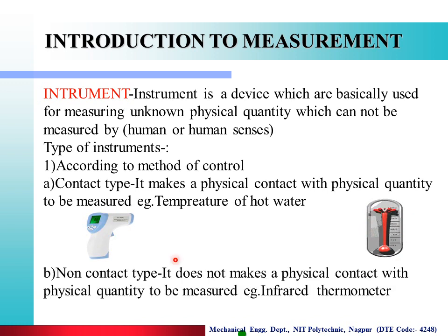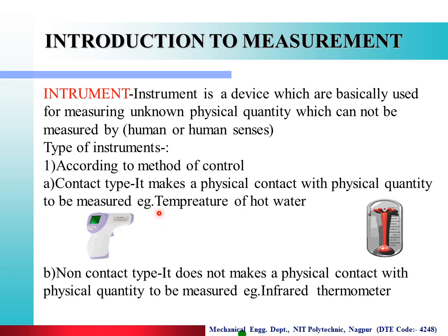The next type is non-contact type instrument — it does not make physical contact with the physical quantity to be measured. For example, measuring a human body's temperature using an infrared thermometer. The infrared thermometer has no contact with the human body. So it is called a non-contact type instrument, as shown in the figure.